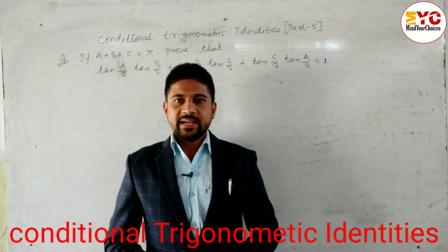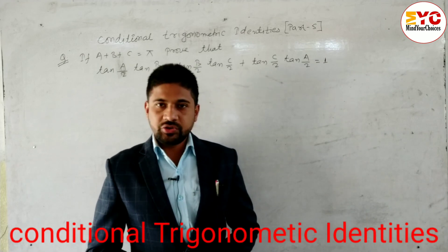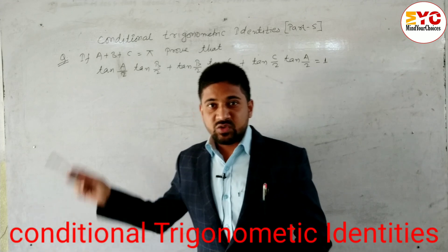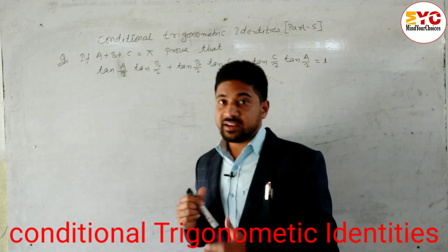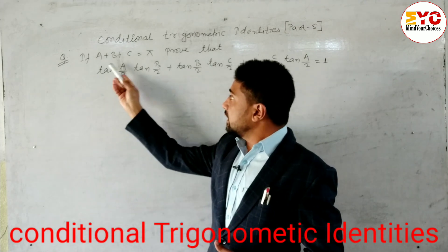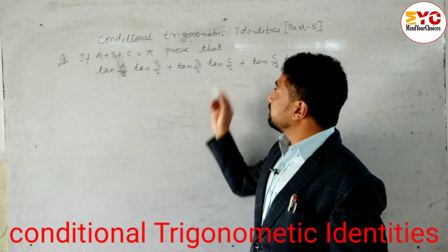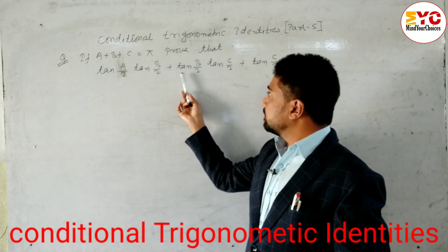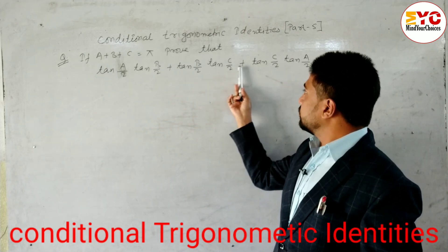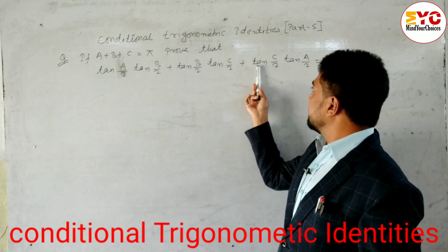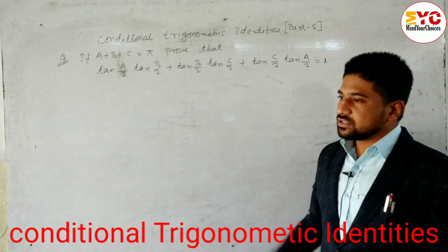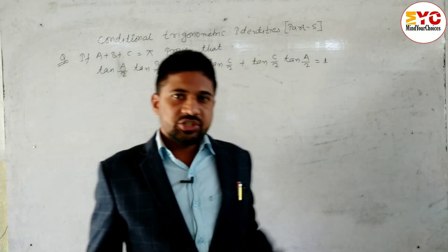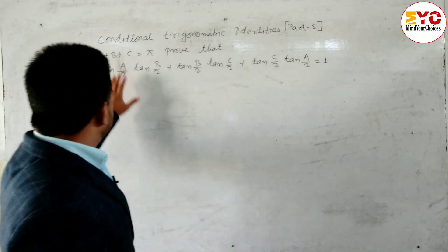Hello everyone, you are watching Mind Your Choices. Today I brought for you conditional trigonometric identities. The question is: if a plus b plus c is equal to pi, prove that tan(a/2)tan(b/2) plus tan(b/2)tan(c/2) plus tan(c/2)tan(a/2) is equal to 1. The condition given is a plus b plus c equals pi.